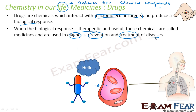Drugs are any chemical that produces a biological response — a bad response or a good response. If it produces a good response, that is a medicine. For example, poison would not be a medicine, but a small dose of poison, if it produces a useful response, could be called a medicine. So drug is the broader category, and medicine is a subclassification — only those drugs that produce a good, useful response and can be used for diagnosis, prevention, and treatment of disease.